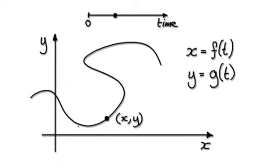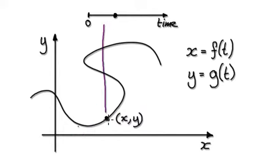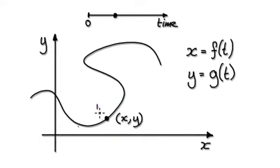Something I forgot to mention in the previous video: if you're trying to find out the derivative of, let's say, this point, you will have to somehow cut up your parametric curve in such a way that it will give you a function. Because currently, as it stands, this here is not a function. You've got this point, this point, and this point. So if you want to find out the derivative at this point here, you have to limit yourself.